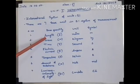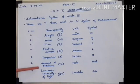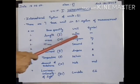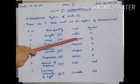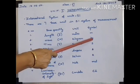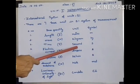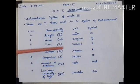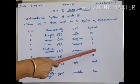The 7 base units are: length, mass, time, electric current, temperature, amount of substance, and luminous intensity of light. To measure length, the SI unit is meter, denoted by the symbol m. For mass, the SI unit is kilogram, symbol kg. For time, the SI unit is second, symbol s. For electric current, the SI unit is ampere, symbol A.